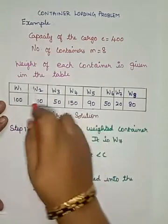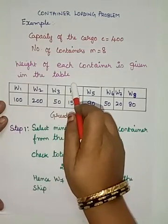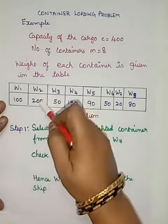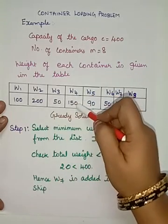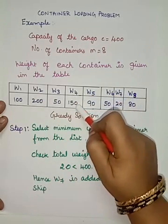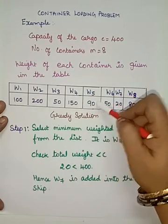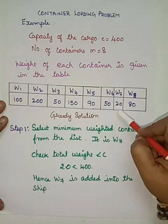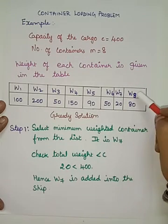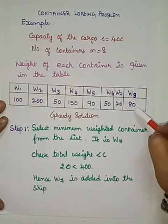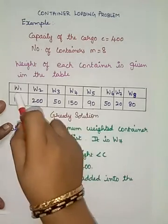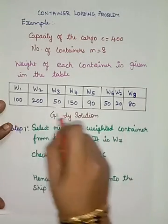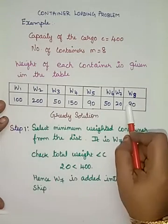The weight of each container is given in the table: w1=100, w2=200, w3=50, w4=150, w5=90, w6=50, w7=20, and w8=80. The weight of every individual container is given, and we are going to apply a greedy solution.